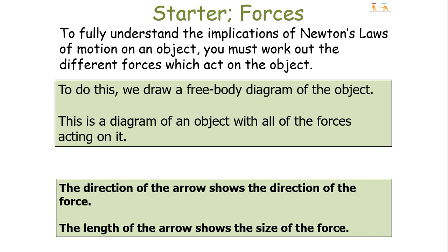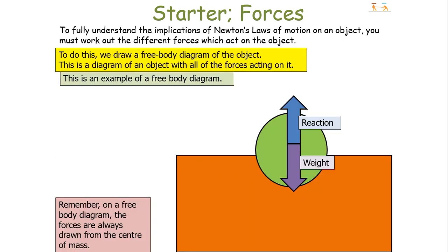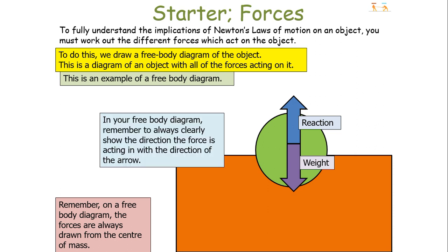To fully understand the implications of Newton's Laws of Motion, we must work out the different forces which act on the object. To do this, we draw a free body diagram — a diagram of an object with all of the forces acting upon it. In this particular example, we have a ball resting on a table, with weight acting downwards and reaction force acting upwards. On a free body diagram, forces are always drawn from the centre of mass, clearly showing directions with arrows.